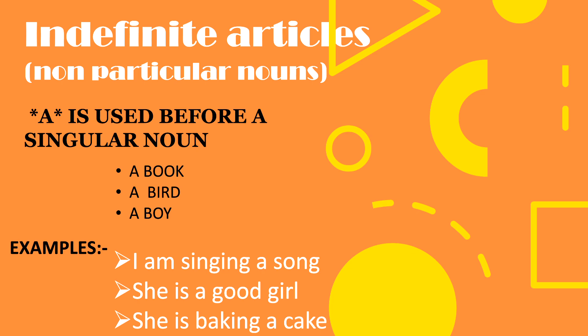I have told you before, indefinite articles are basically 'a' and 'an'. They are non-particular nouns. In this case, 'a' is used before a singular noun—a book, a bird, a boy. Examples of these include: I am singing a song, she is a good girl, she is baking a cake.